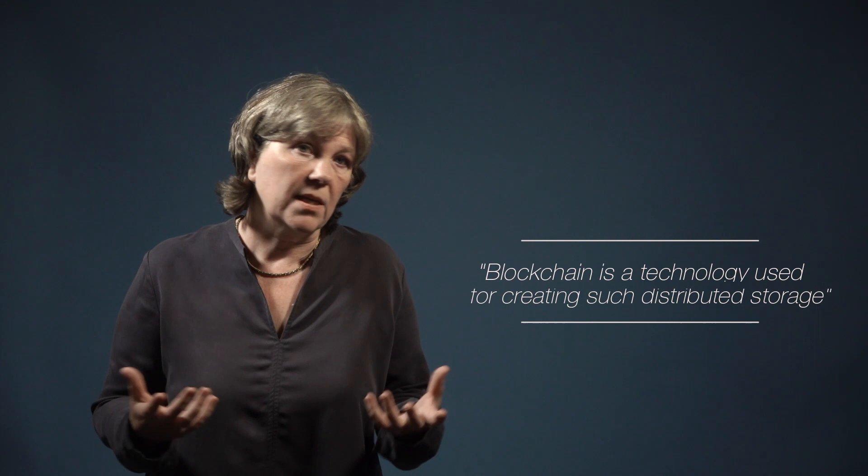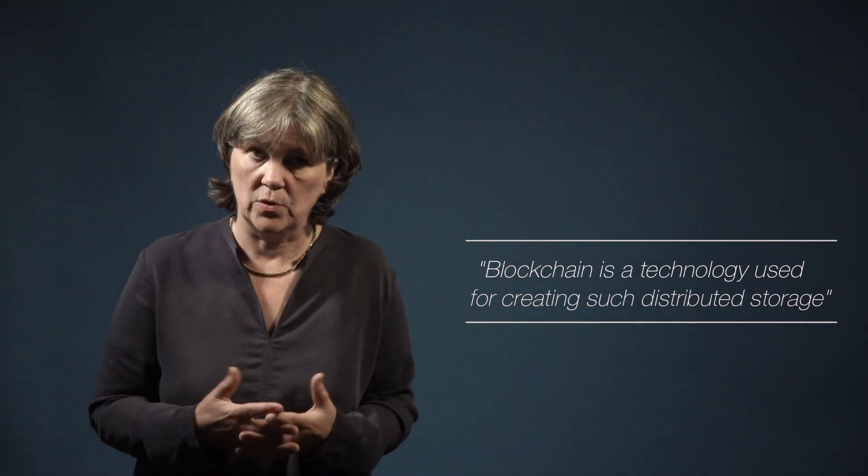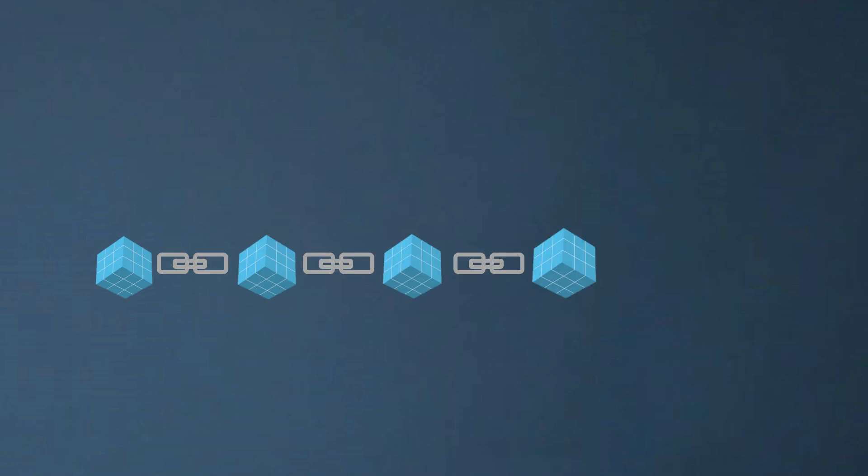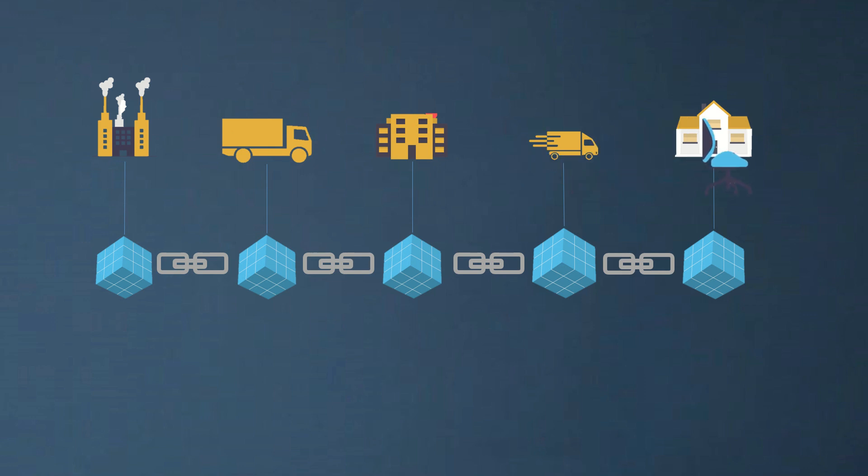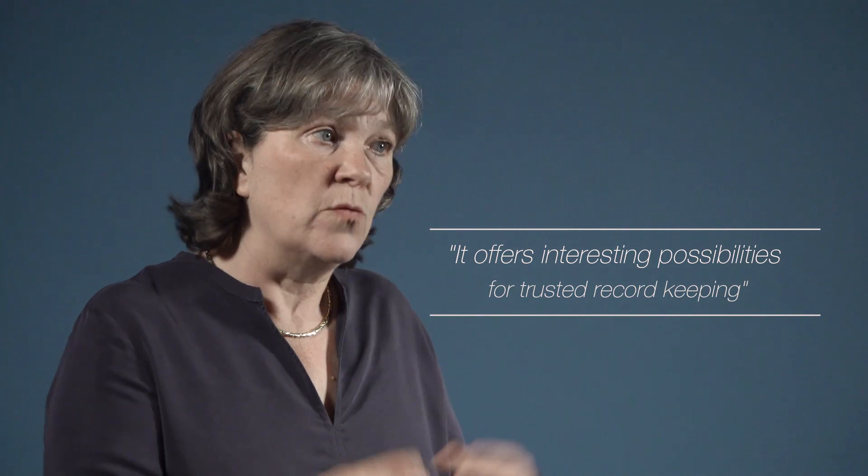Blockchain is a technology used for creating such distributed storage of a history of transactions. A blockchain system can also be used to store information about material goods and how these are handled in a logistic chain. In this way, it offers interesting possibilities for trusted record keeping on food chains, the origin of FSC labeled wood, etc.